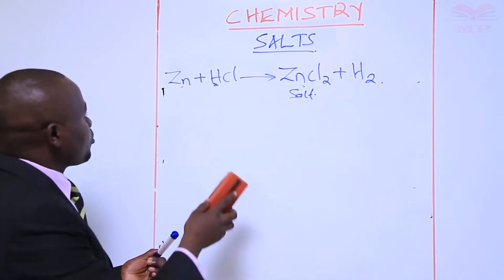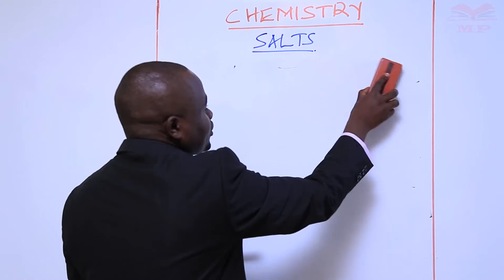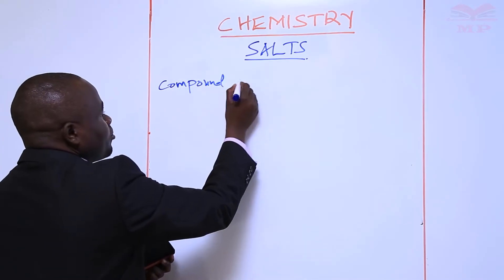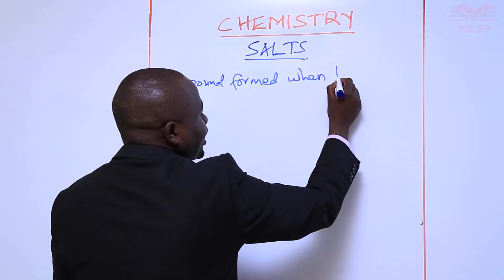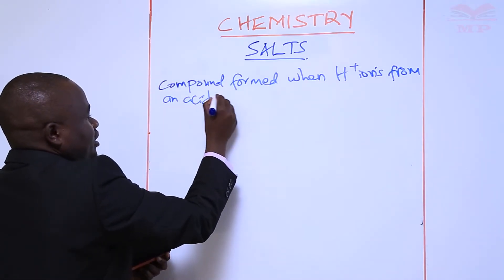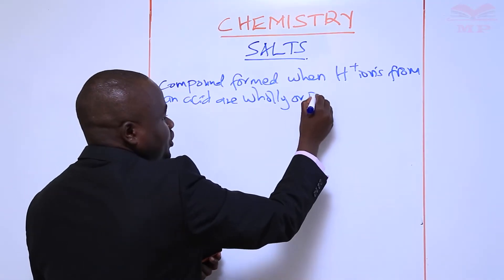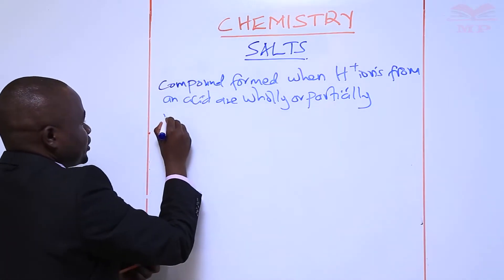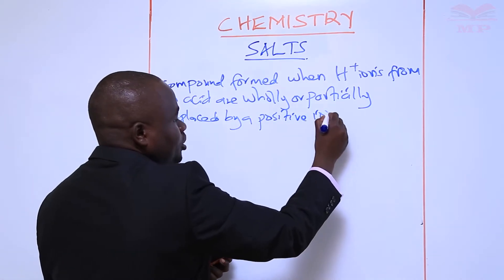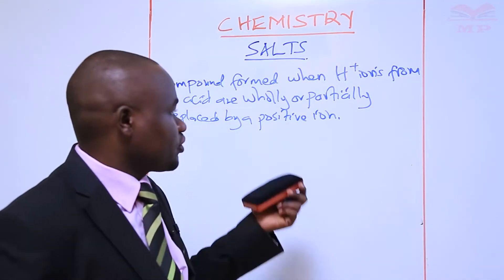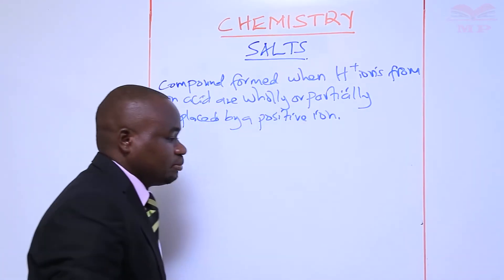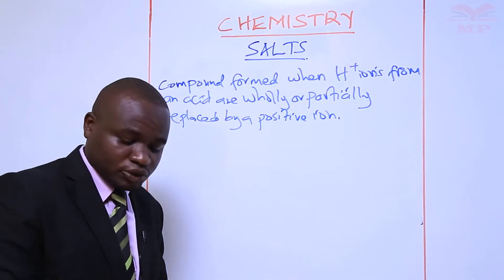So let's now move on by looking at types of salt. A salt is defined as a compound formed when hydrogen ions from an acid are wholly or partially replaced by a positive ion. A positive ion is also called a cation, which can be a metal. We have four types of salts.